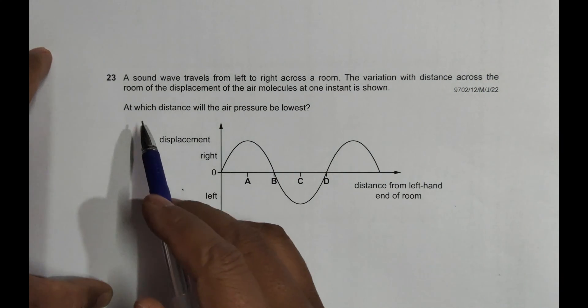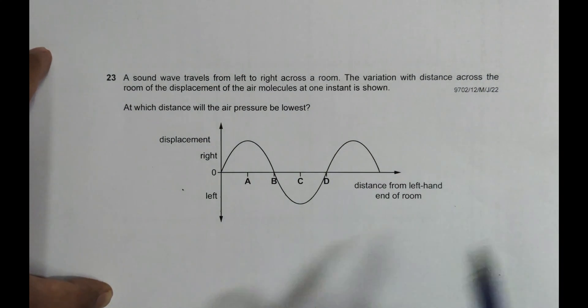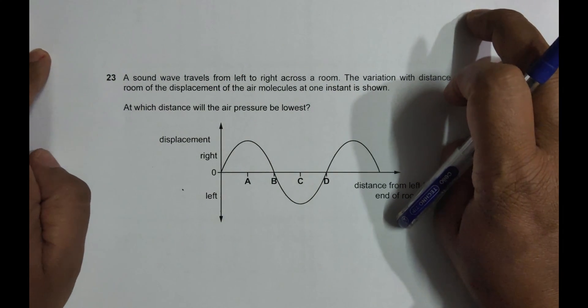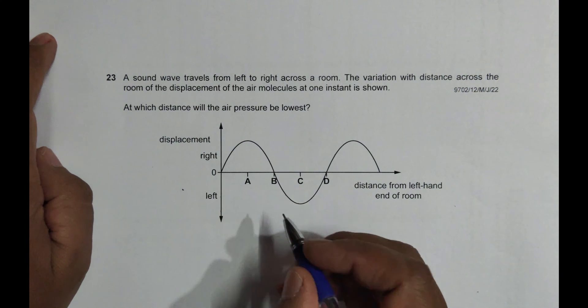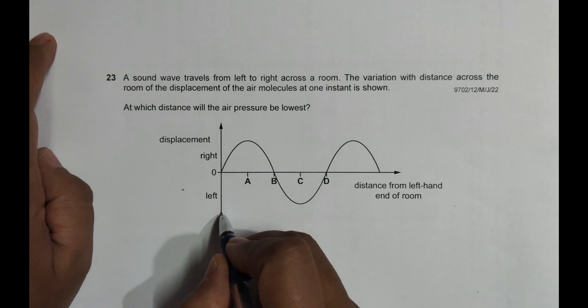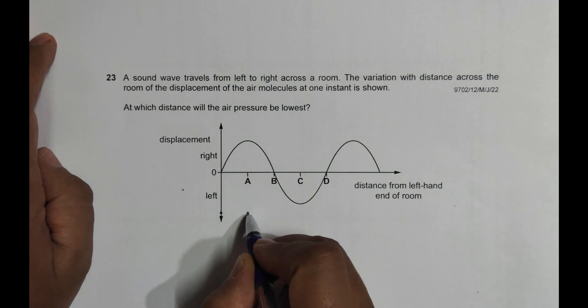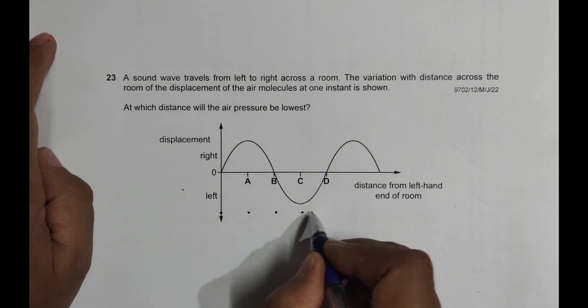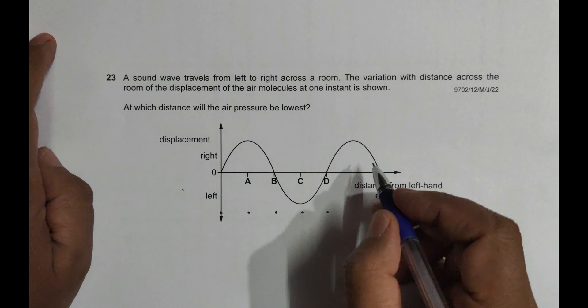So by looking at the diagram, we have to say at which distance will the air pressure be lowest. So first of all, let us draw a simple simulation of that longitudinal wave. So let's say the particle here, this particle is A, this particle is B, this is C, this is D